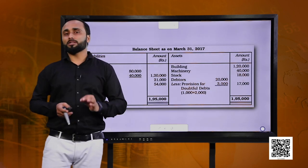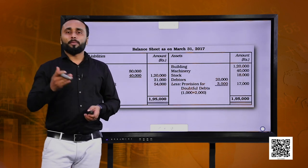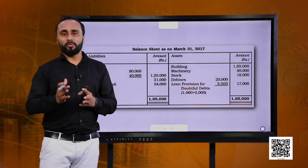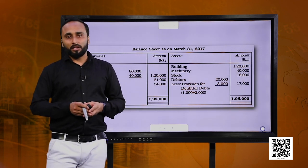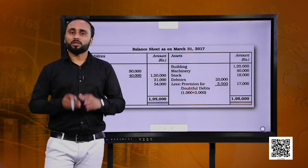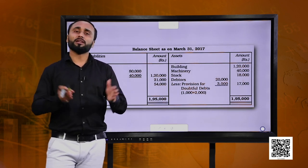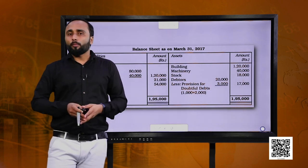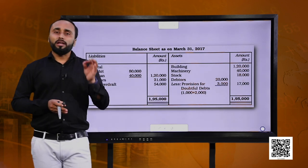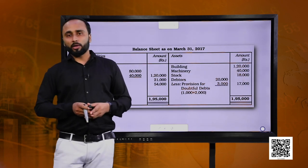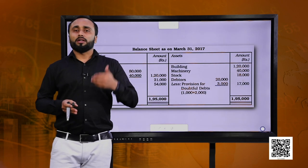Remember while adjusting the capitals of remaining partners: see how much capital they already have after all adjustments, then check what capital they need to keep in the new firm, and find the difference. Which partner has to withdraw? Which partner has to bring amounts? Always pay attention to the cash or bank balance — remember to adjust for the amount paid to the retiring partner and the adjustments made by remaining partners. This was a comprehensive question covering all nuances of retirement of a partner.